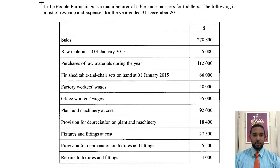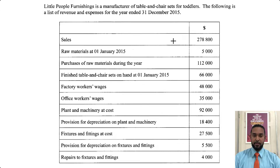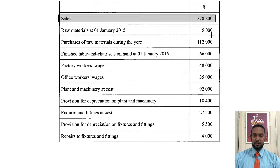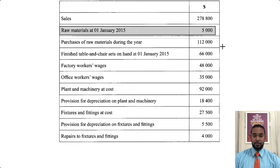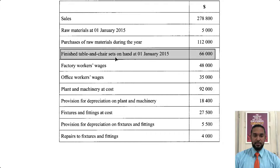So as per usual, we're going to take a read of the question. It says: Little People Furnishings is a manufacturer of table and chair sets for toddlers. The following is a list of revenue and expenses for the year ended 31st December 2015. So we have sales, raw materials at start, purchases of raw materials, and finished table and chair sets on hand — that's stock of finished goods.